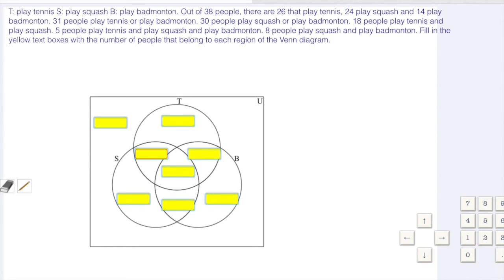All right, so we start off, we know there's 38 people in total. I'm going to click on my pencil. I'm going to put 38 up here beside the U, the universal set. So we know there's 38 inside the big box. 26 play tennis, so I'm going to put 26 beside the T, meaning that inside this circle is 26.